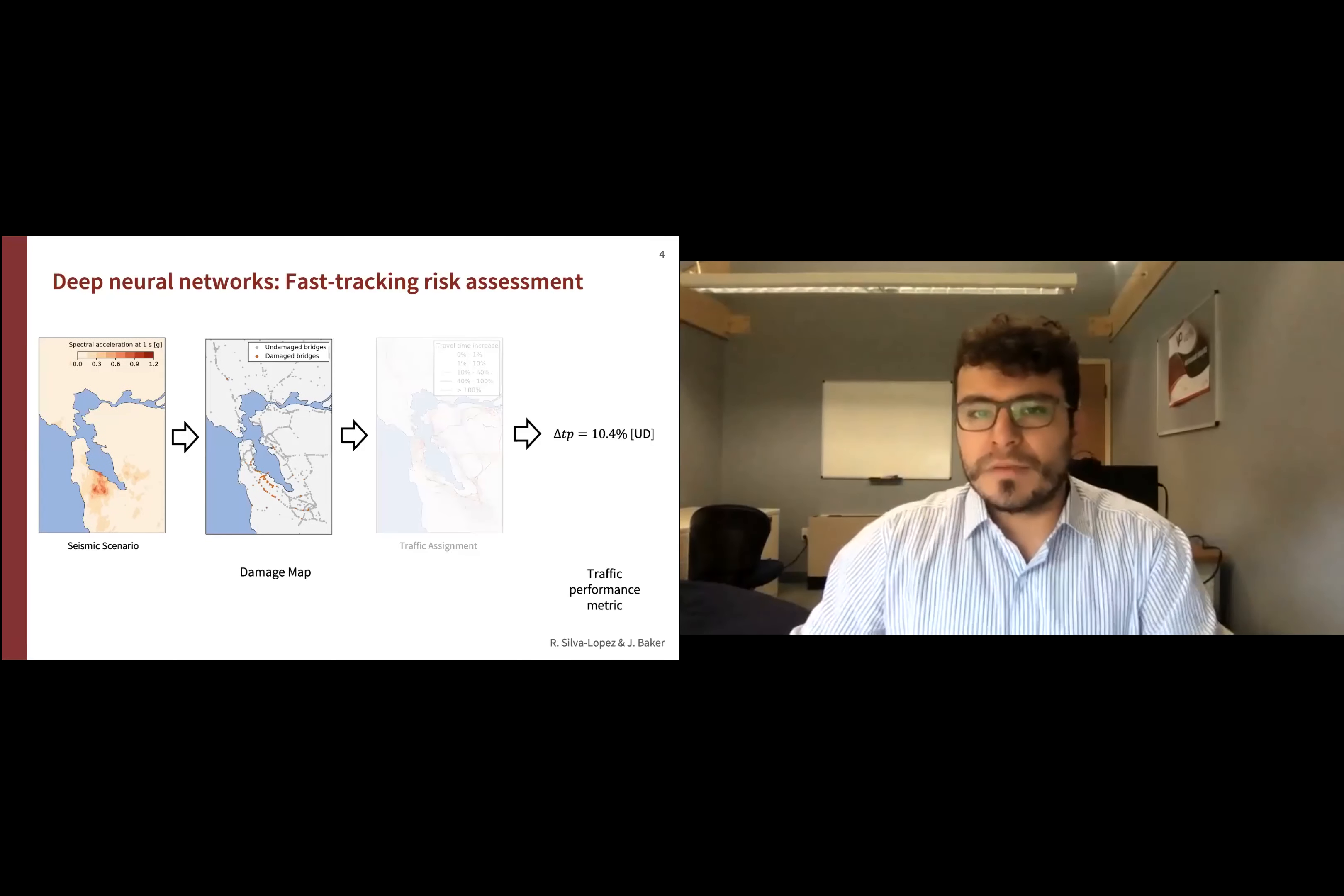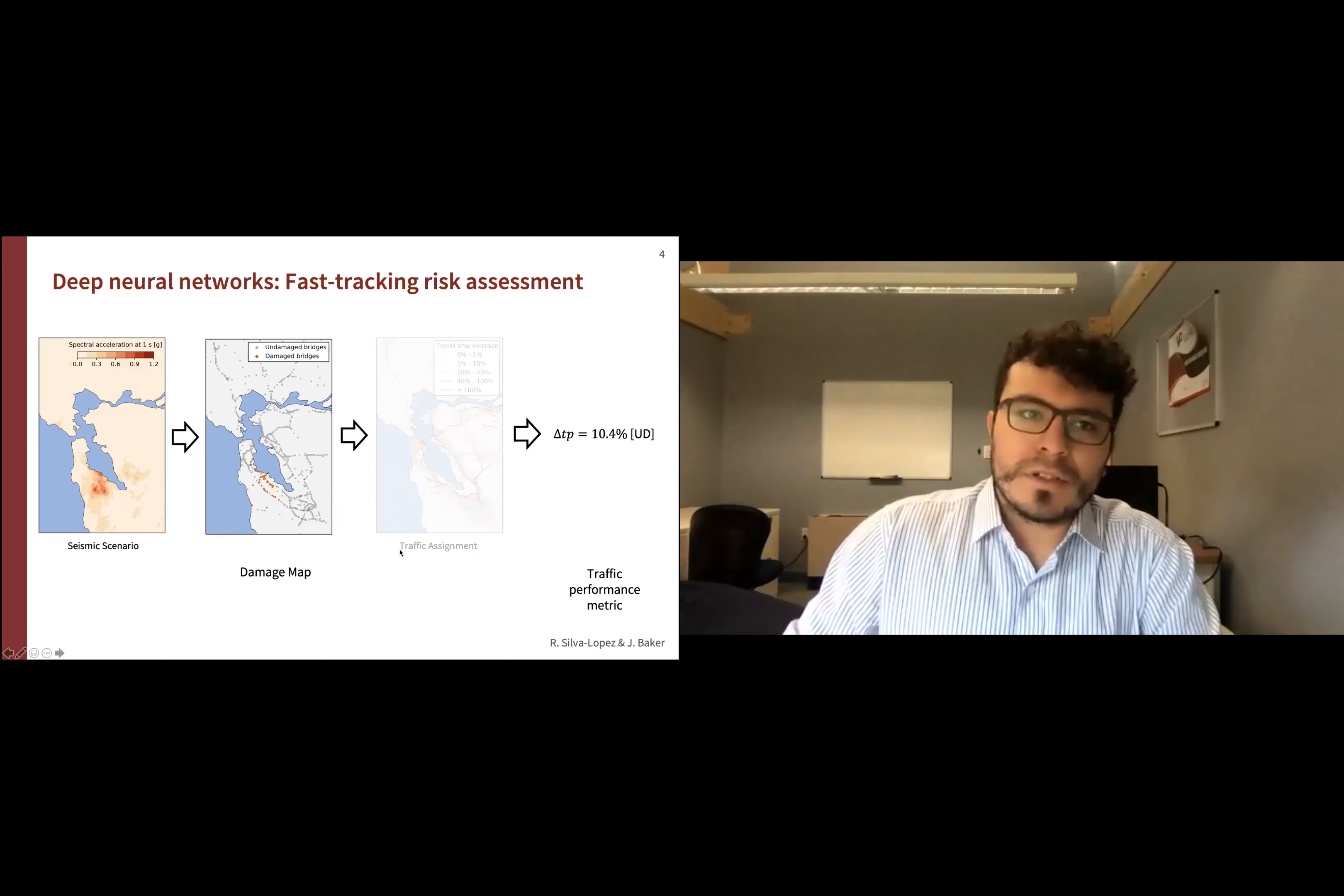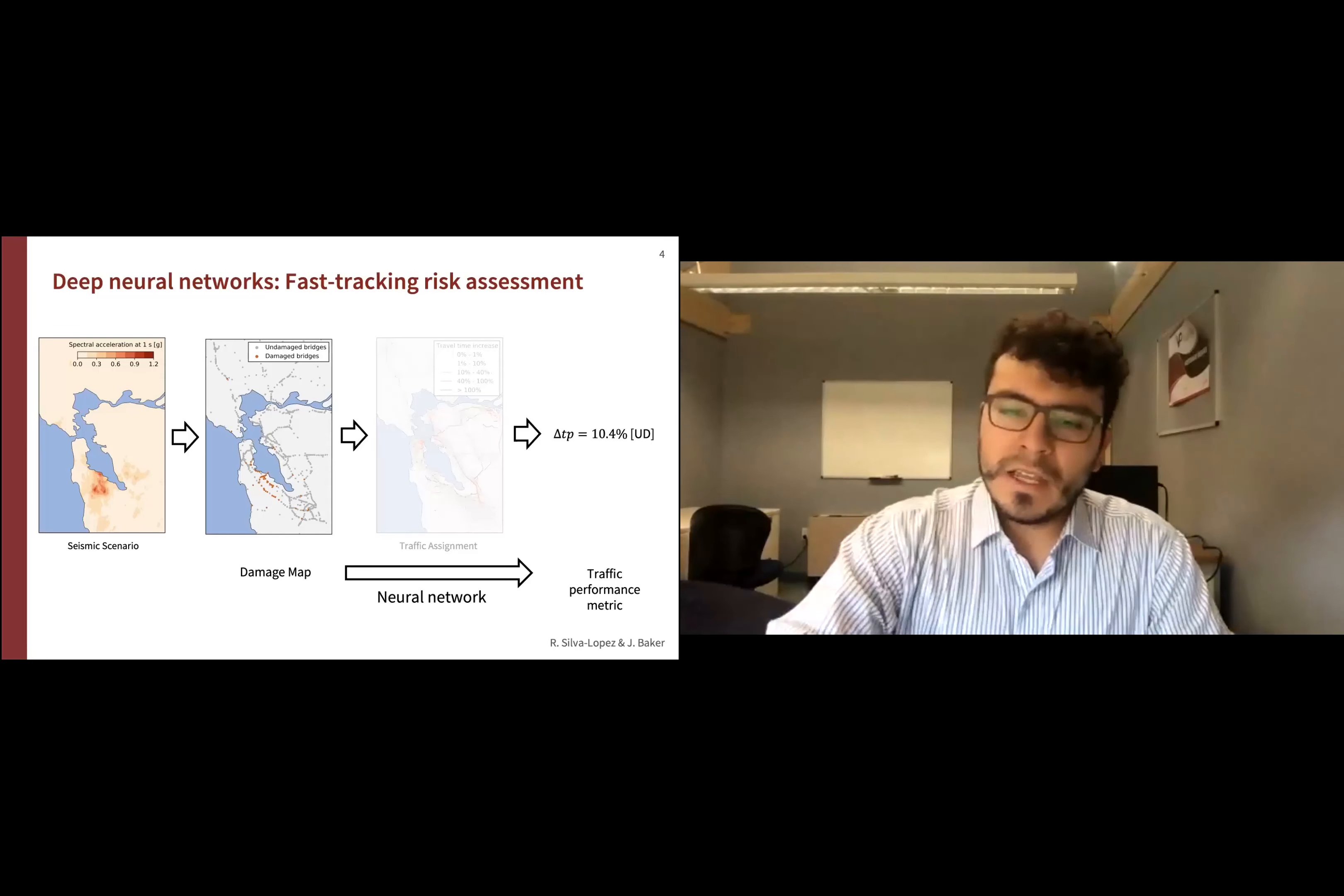With Professor Baker, we started thinking, how can we skip this step of assigning traffic while still providing an accurate and rapid surrogate model? We observed that using deep neural networks will help us fast-track the risk assessment of these systems. Starting from a damage map, the neural network will go directly to a traffic performance metric.